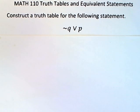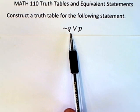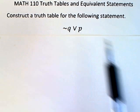Let's look at a very simple example of constructing a truth table. The statement that we want to construct a truth table for is this one: not Q or P.